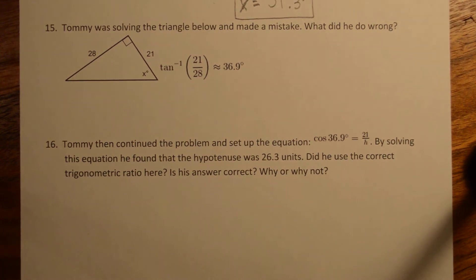Okay, problems 15 and 16. So Tommy was solving the triangle below and made a mistake. What did he do wrong?